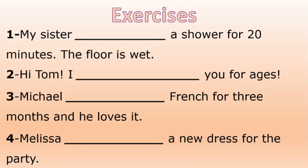Now we have some exercises. We have four sentences and the idea is to identify which is the correct tense — present perfect simple or present perfect continuous. The first sentence: 'My sister ___ a shower for 20 minutes, the floor is wet.' Options: present perfect simple — 'My sister has had' — or present perfect continuous — 'My sister has been having.' You need to decide.